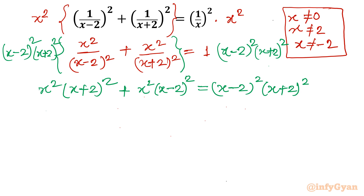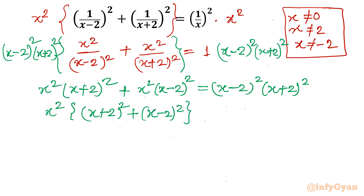Now we take x squared common on the LHS. So we have x squared times [(x plus 2) squared plus (x minus 2) squared]. On the right-hand side, since the powers are the same, we can write it as [(x minus 2)(x plus 2)] squared, which equals (x squared minus 4) squared.